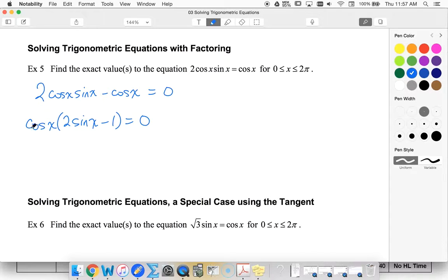I know that if I've got a product equal to zero, that means that cos x must equal zero or two sine x minus one must equal zero. I know cosine of x is equal to zero. If I'm thinking from zero to two pi, that happens at pi over two or three pi over two.